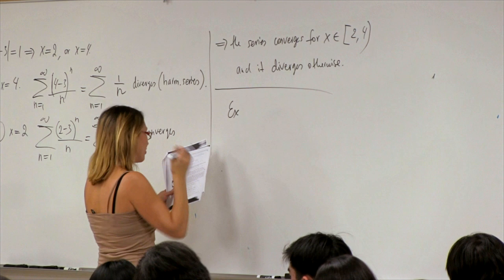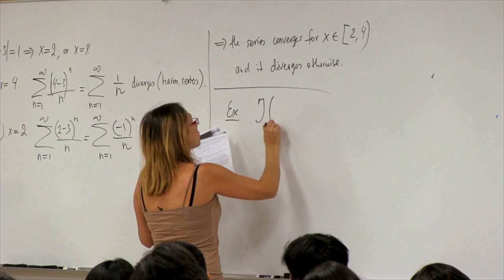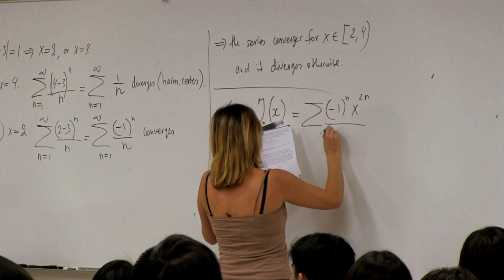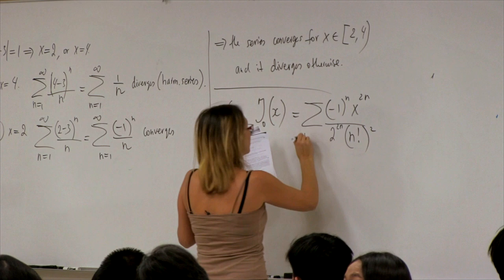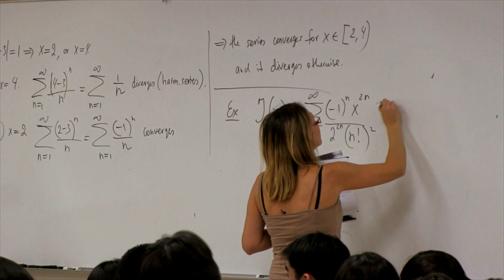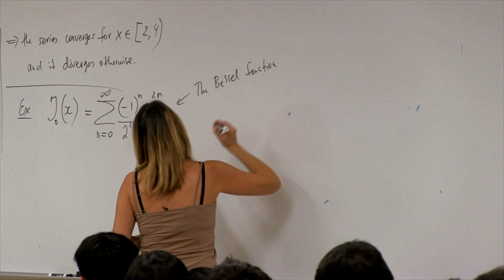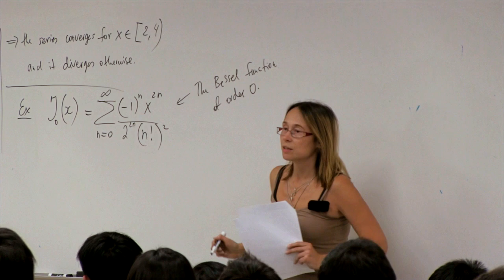The next example, which I like very much, is the Bessel function of order zero, J₀(x). It looks like this: the sum from n=0 to infinity of (−1)^n x^(2n) divided by 2^(2n) times (n!)².